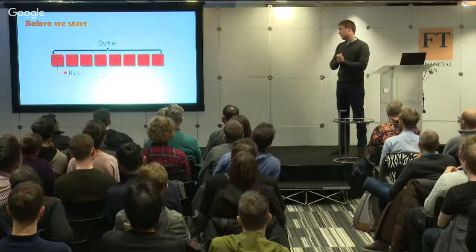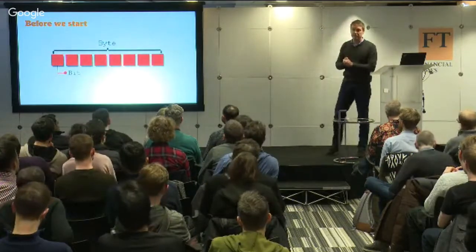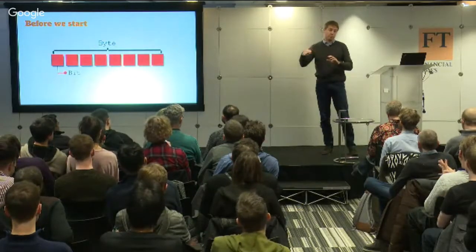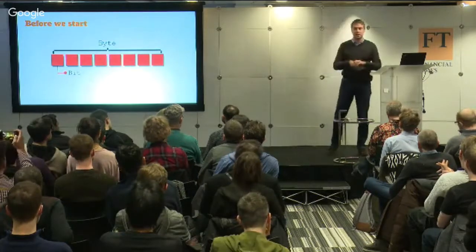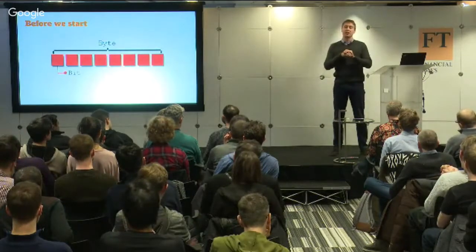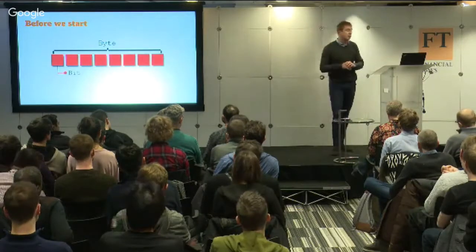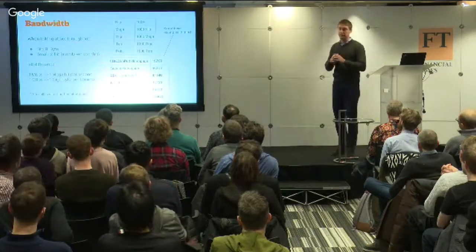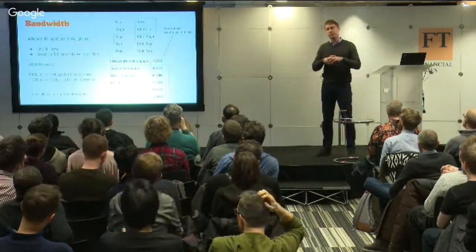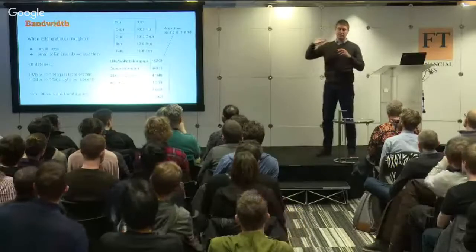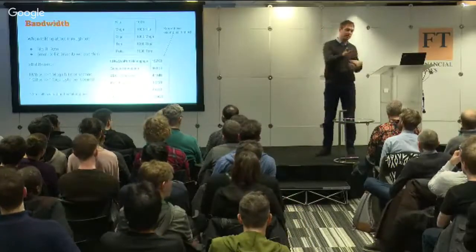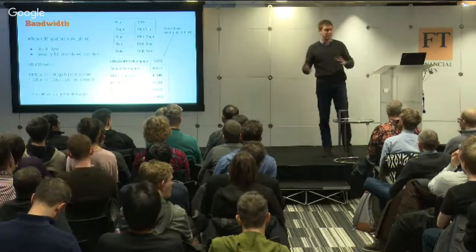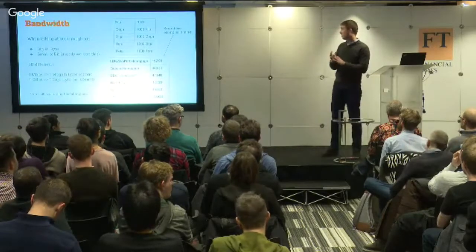Before we actually talk about DDoS attacks, a quick networking recap. There are eight bits in a byte. When we talk about bandwidth or throughput, we usually refer to bits per second or bits per month, not bytes. A lot of people get confused by this and it's quite important to get them the right way round because there's actually a factor of eight difference.